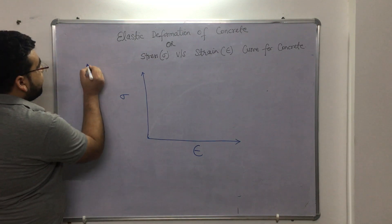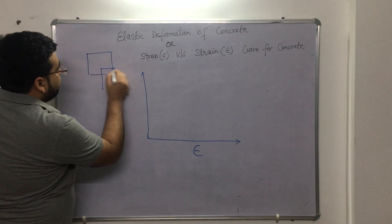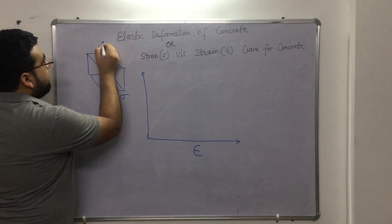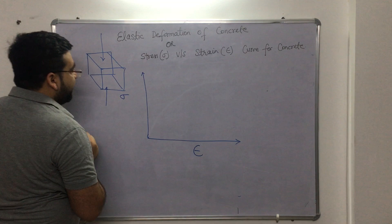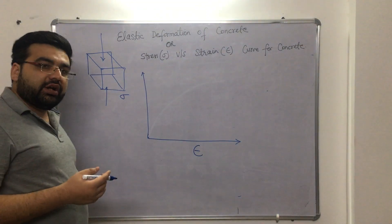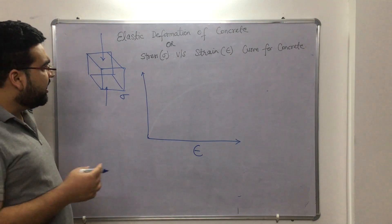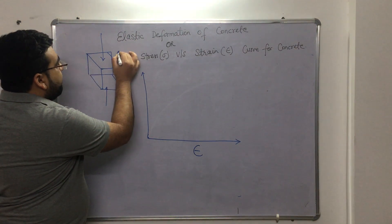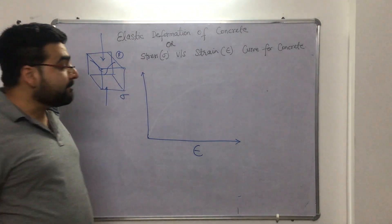Now let us say this is a cubical mold of 115 × 115 × 150 mm. You apply some load from the top as well as the bottom. What will happen is: when you initially apply load, the stress will increase, strain will also increase, and at some point a load P will be reached where it will break — you can say it has failed.